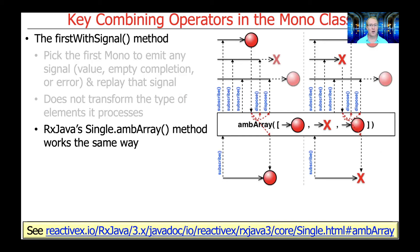There's also a very similar method with the same semantics but a slightly different name in RxJava — this is the Single.ambArray, where AMB stands for ambivalent. It doesn't really care which thing runs faster — it's ambivalent, so it'll just pick the one that finishes first. They used to have a similarly named method in Project Reactor, but they finally changed it to FirstWithSignal, which is a little bit more descriptive than ambArray.